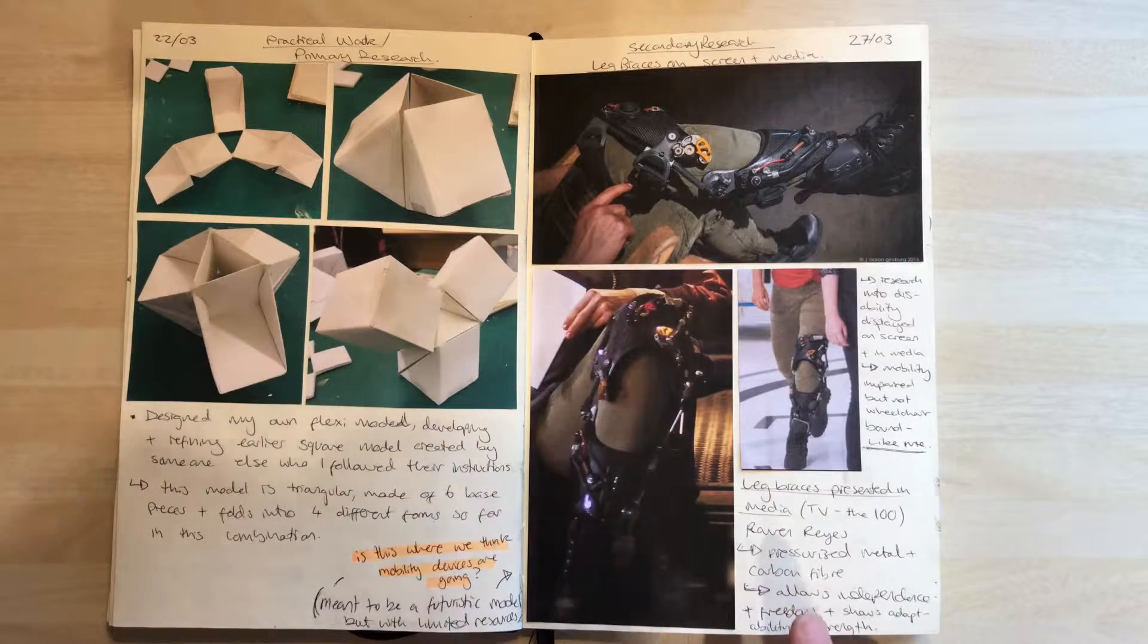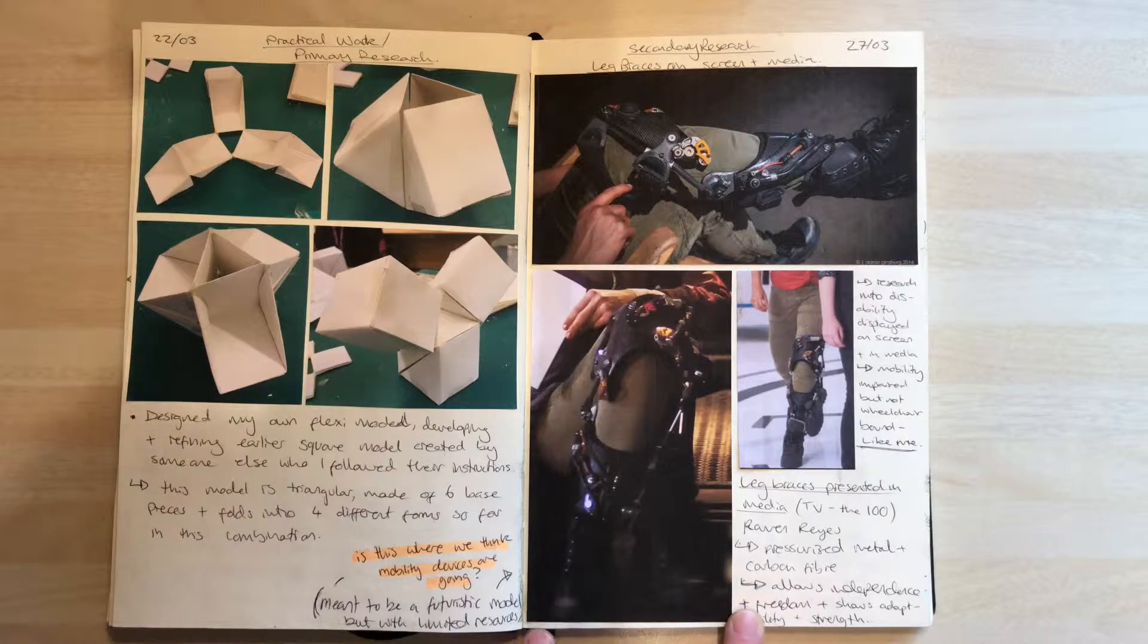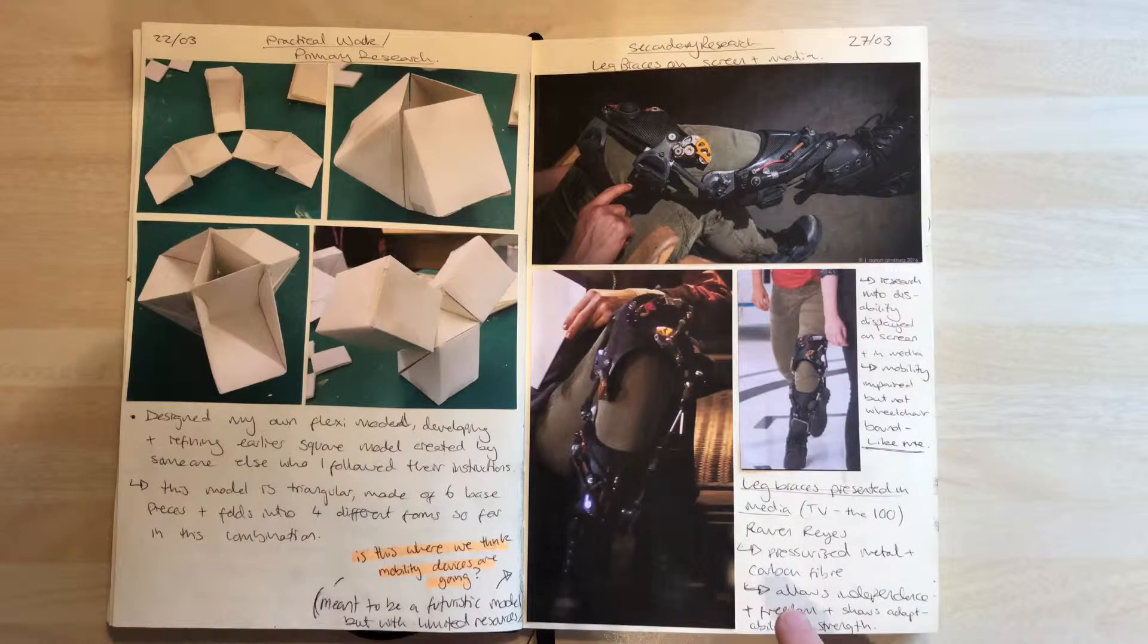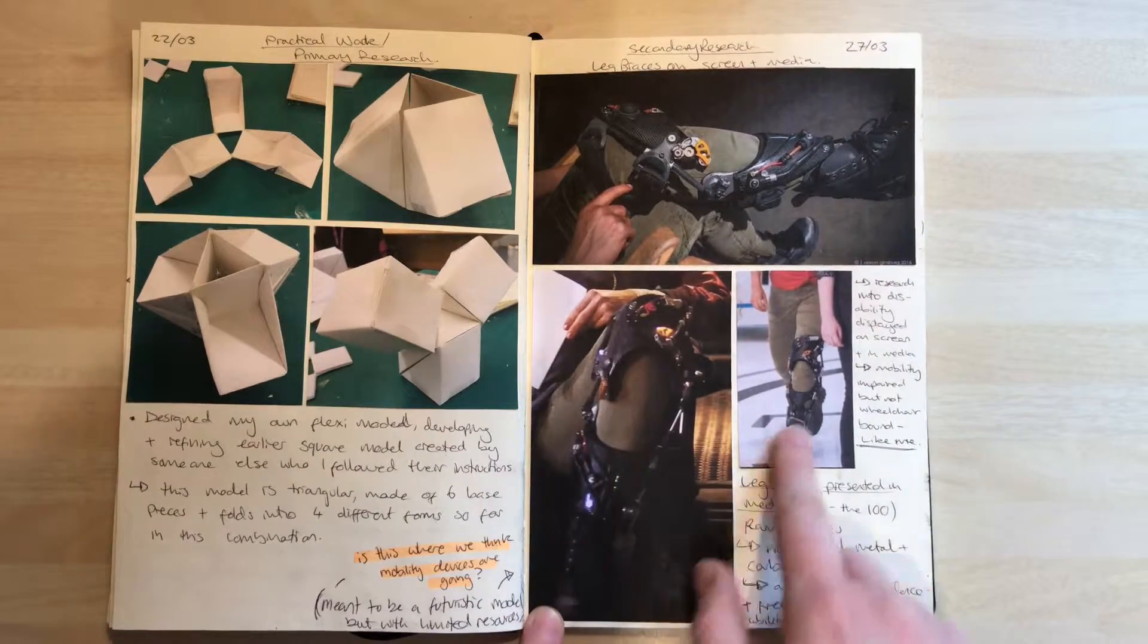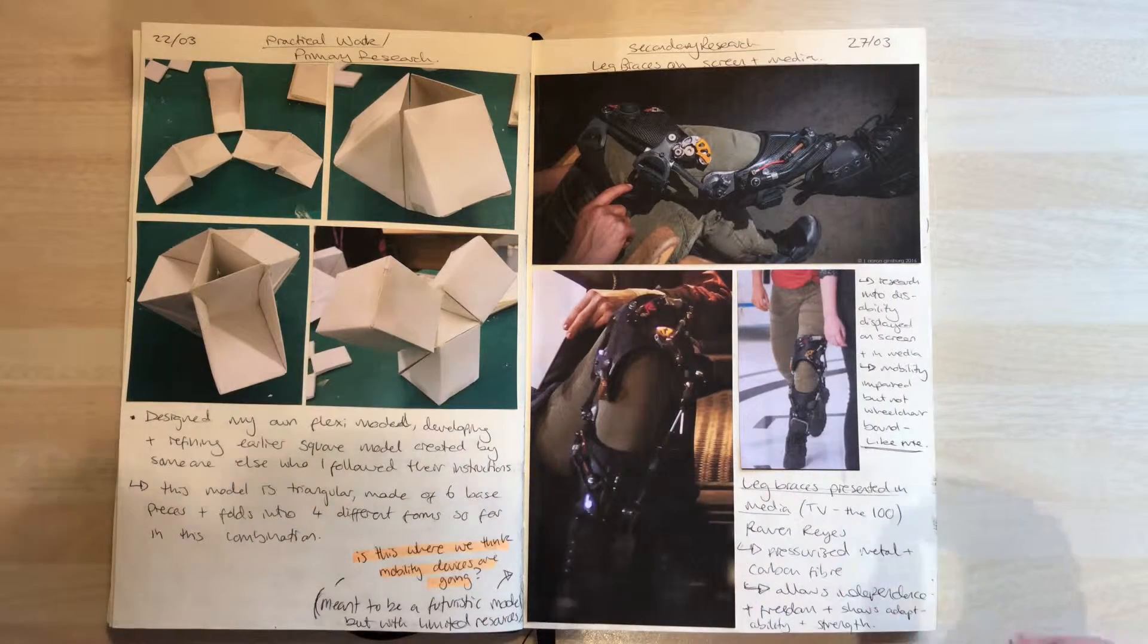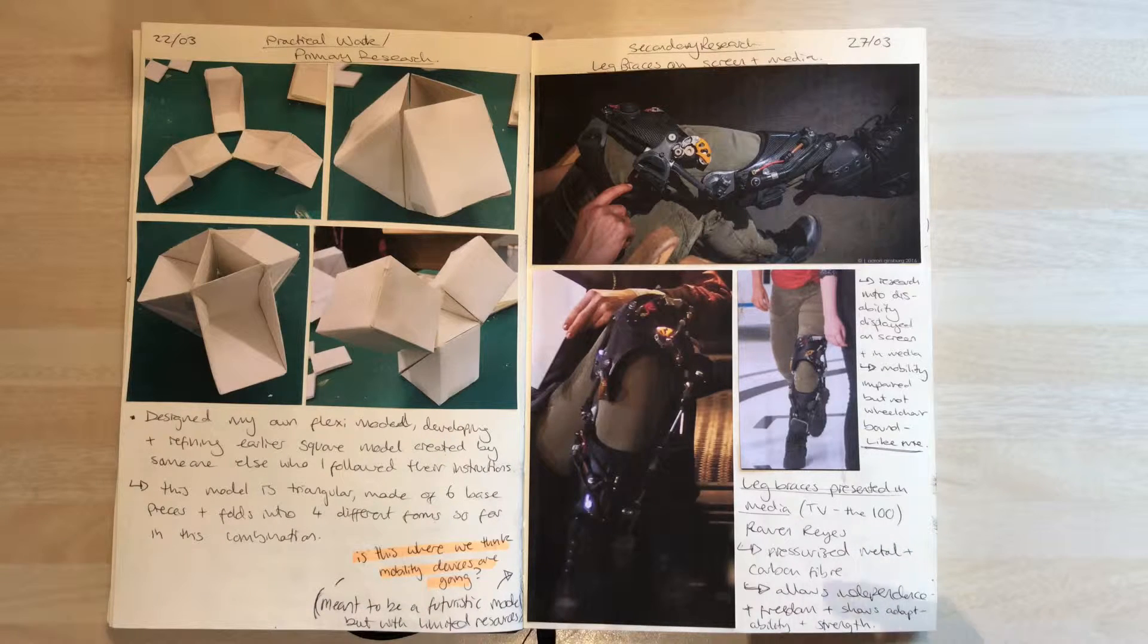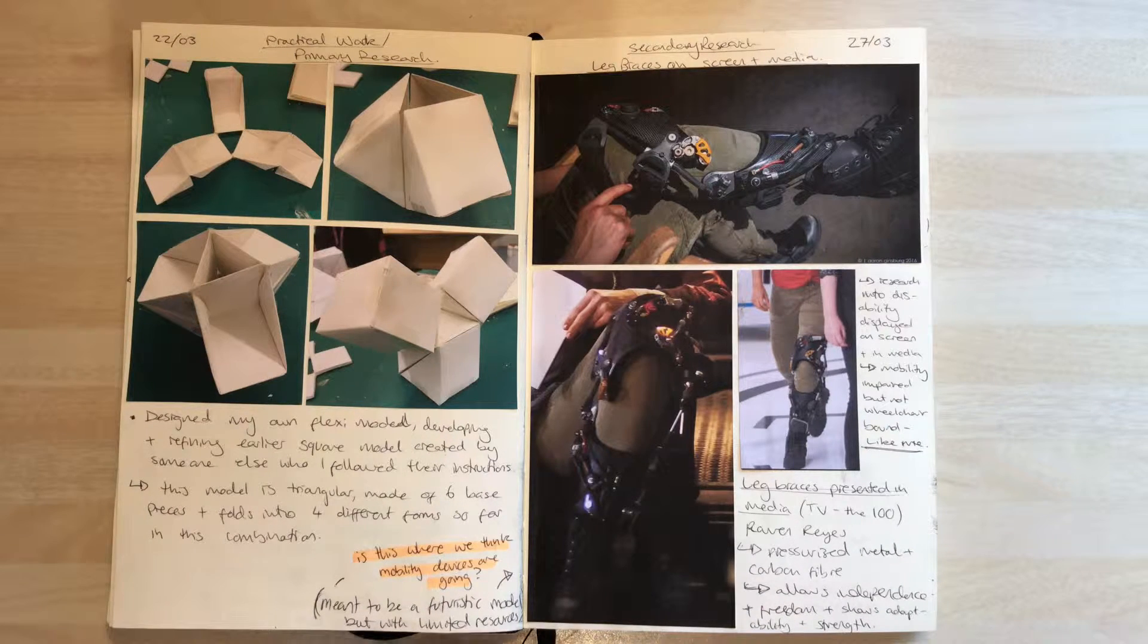And this is in the show The 100, there's this character called Raven and she wears this leg brace, but it's set 100 years in the future. So this is an idea into what the creators of that show thought mobility, where they thought mobility aids were going.